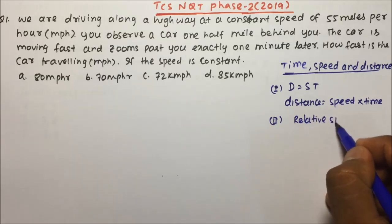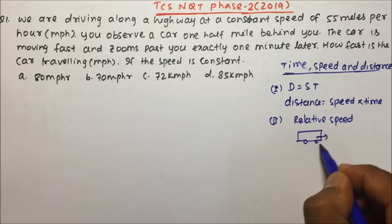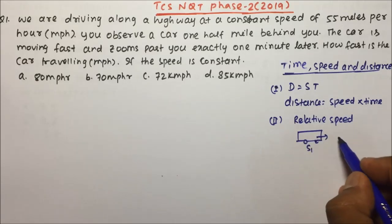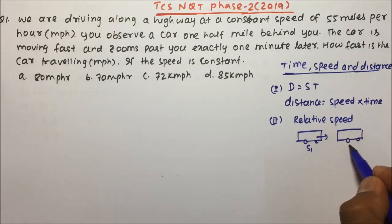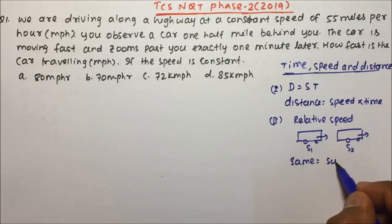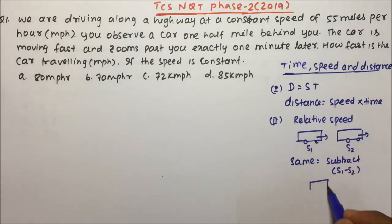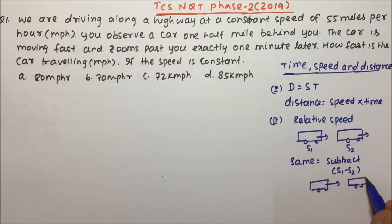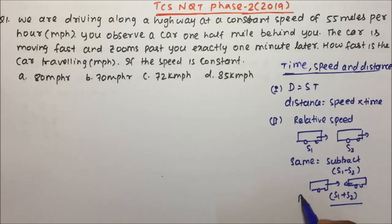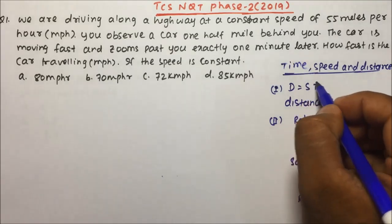The second concept is relative speed. If two vehicles are moving in the same direction with speeds S1 and S2, then you subtract the speeds — same direction, subtract. If both vehicles are moving in the opposite direction, then the relative speed will be the addition of both speeds.